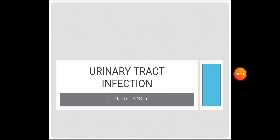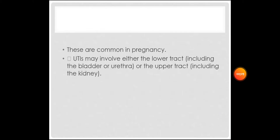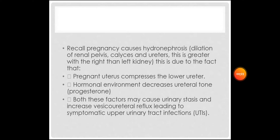Hello everyone, today we'll be talking about urinary tract infection in pregnancy. UTIs are common in pregnancy and may involve either the lower tract, including the bladder or urethra, or the upper tract, including the kidney. Recall that pregnancy causes hydronephrosis, which refers to dilation of the renal pelvis, calyces, and ureters.